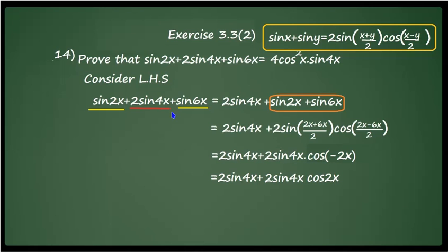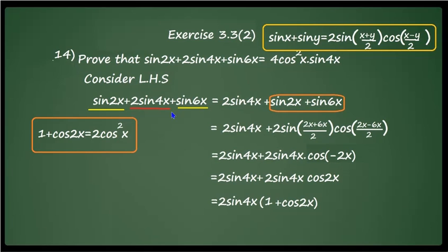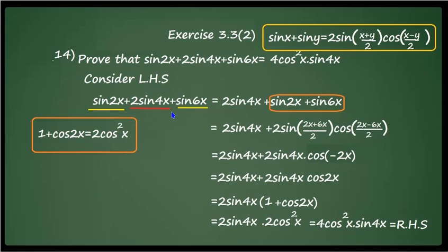Taking 2 sin 4x common leaves (1 + cos 2x). Now apply the identity 1 + cos 2x = 2 cos²x — remember this formula from the earlier session. Alternatively, substitute cos 2x = 2 cos²x − 1 and simplify. Using 1 + cos 2x = 2 cos²x, we get 2 sin 4x · 2 cos²x = 4 cos²x · sin 4x, which equals the right-hand side.